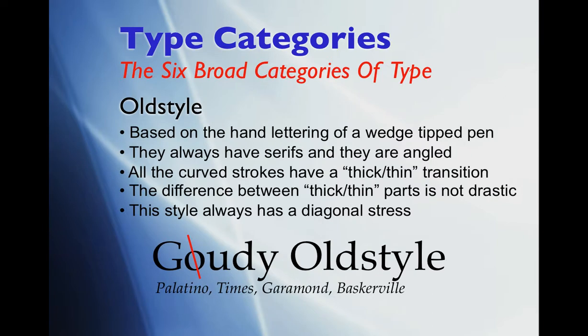The first category is what's called Old Style. It's based on the early days of hand lettering with a wedge-tipped pen. When I was in school many moons ago, we had some classes where we worked with the old pen and ink using different nibs to get different looks and feel. We've all seen folks in some old movie — Ben Franklin or something — using a quill pen, basically from a feather, and they cut the tip off at an angle.